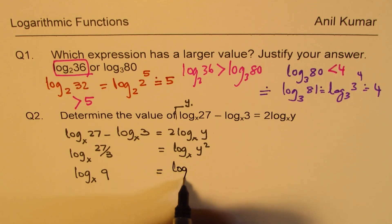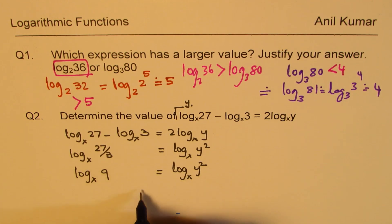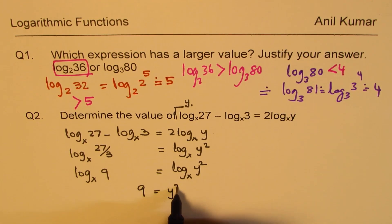So the left side now becomes log to the base x of 9. And on the right side, we have log to the base x of y squared. Now, since the bases are same, we could write 9 equals y squared.